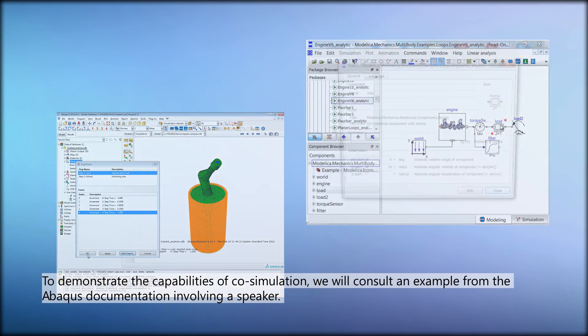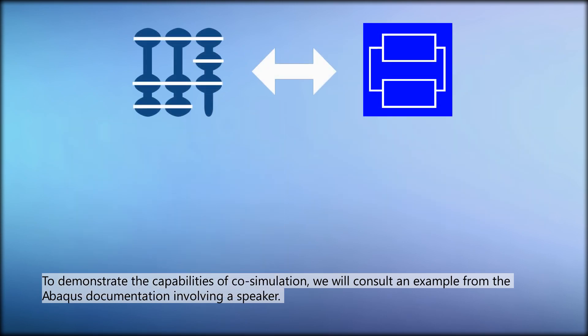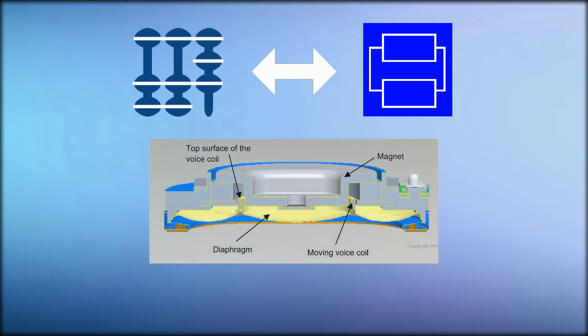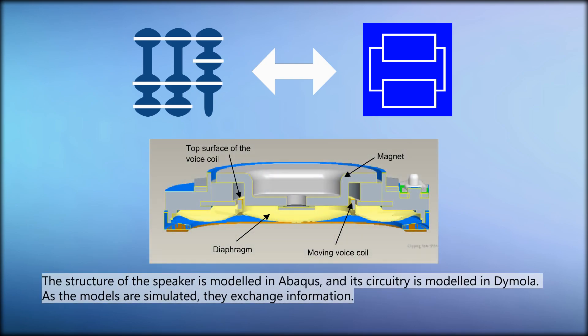To demonstrate the capabilities of co-simulation, we will consult an example from the Abacus documentation involving a speaker. The structure of the speaker is modeled in Abacus, and its circuitry is modeled in Dymola. As the models are simulated, they exchange information.